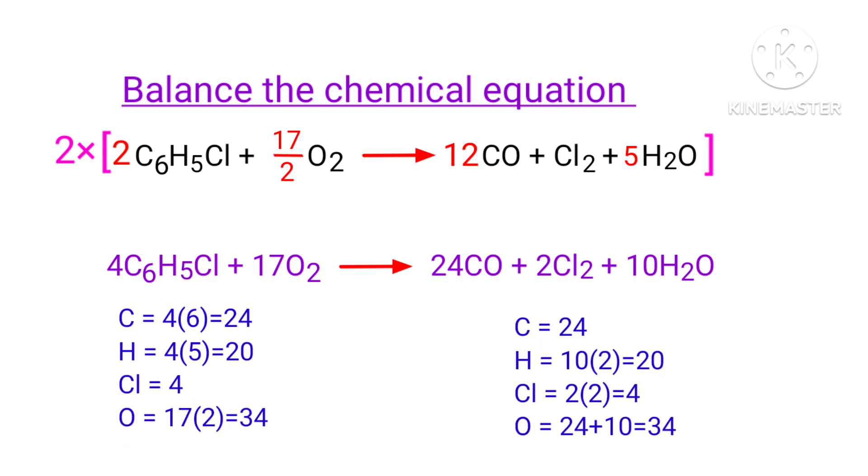The equation is now balanced. There are 24 carbon atoms, 20 hydrogen atoms, 4 chlorine atoms, and 34 oxygen atoms on both sides.